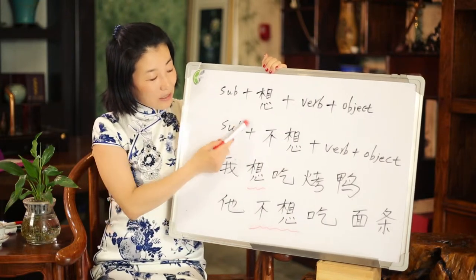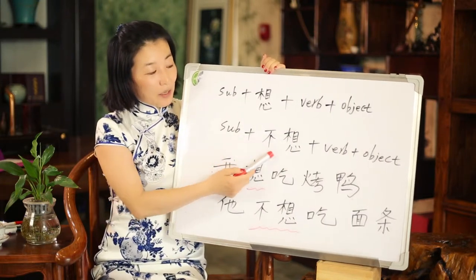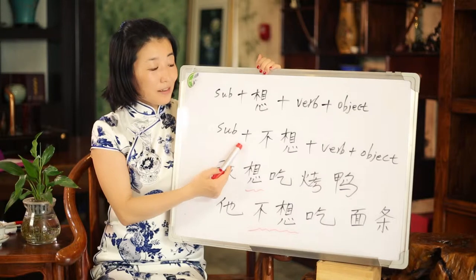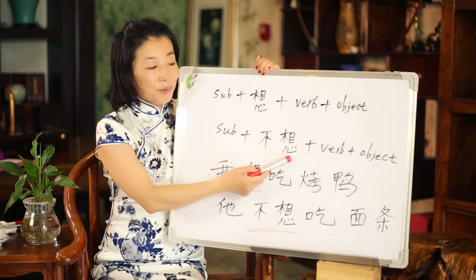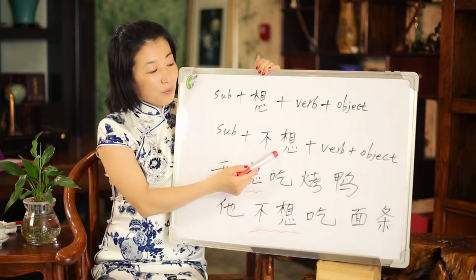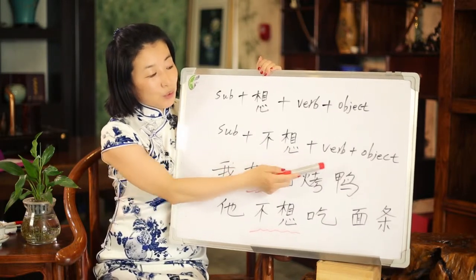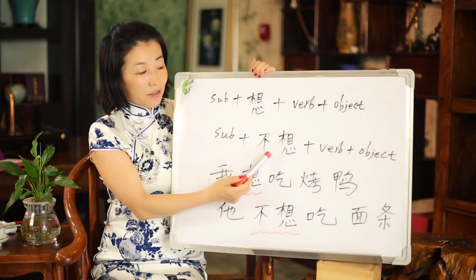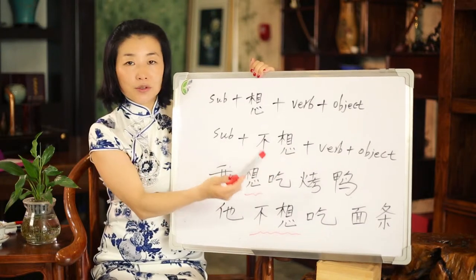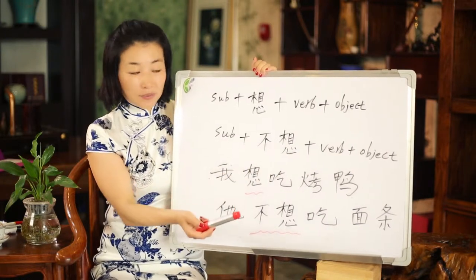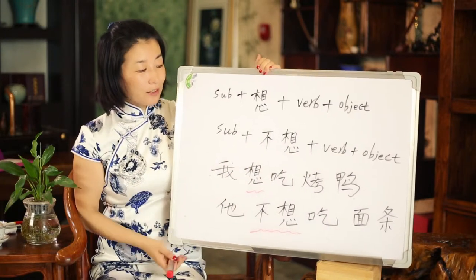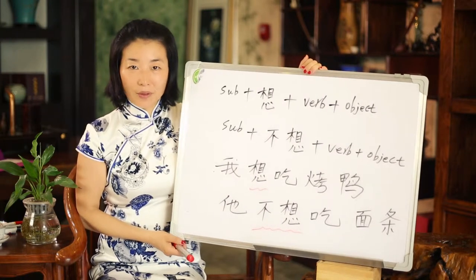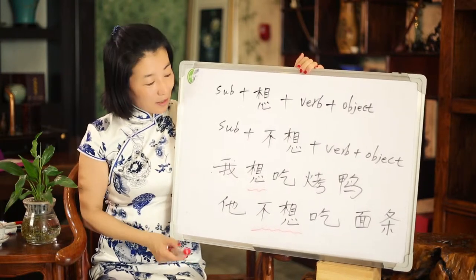So your negative form is 不想. Subject + 不想 — for example, 不想去中国 means doesn't want to go to China, wouldn't like to go to China.